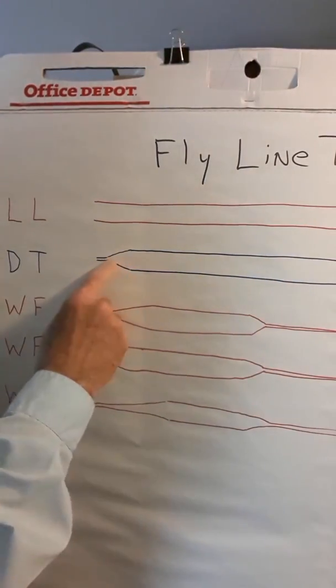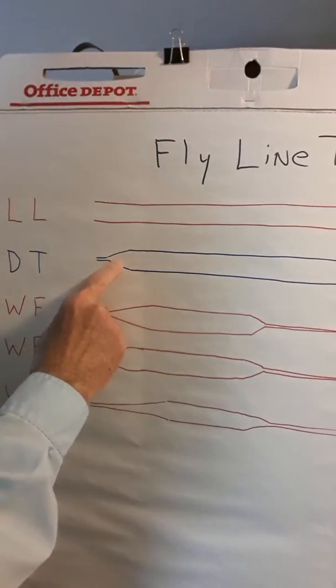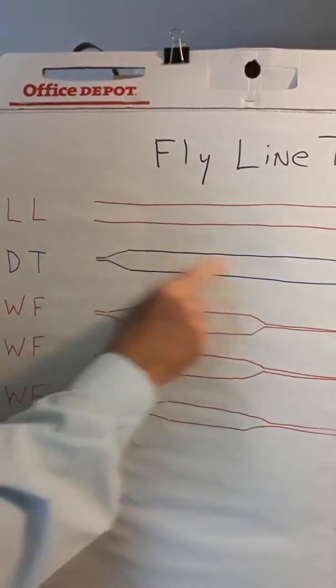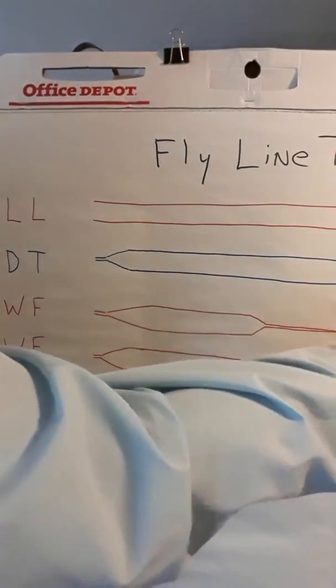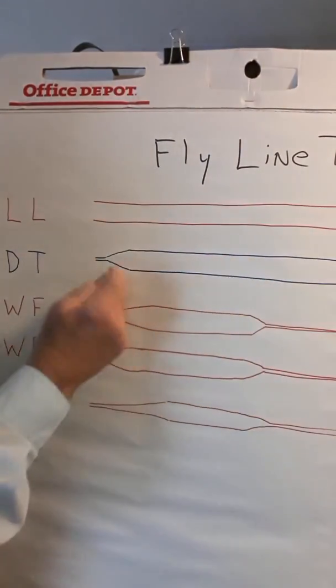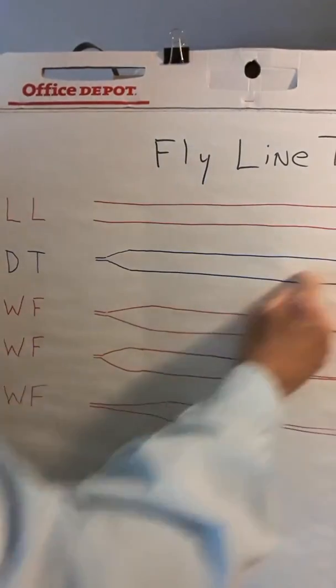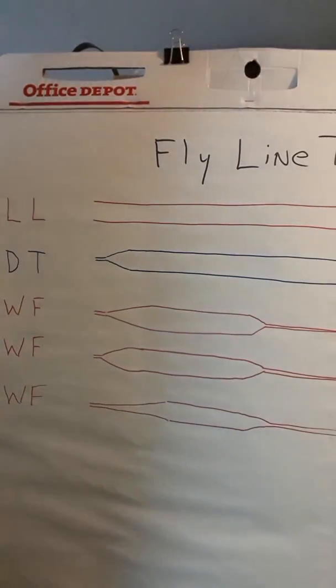So again, when you're under fishing conditions, when you wear this part of the fly line out, simply take this part off of the backing, flip the line around, tie this part to the backing, and you have a brand new section of fly line. So you basically have two fly lines in one. That's your double tapered fly line.